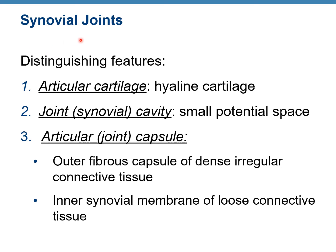The features that distinguish synovial joints from other types: first, they have articular cartilage — hyaline cartilage — on both bones forming the joint. Then they have a synovial cavity, which is a small potential space. They also have an articular capsule or synovial capsule. The articular capsule has two layers: the outer is the fibrous capsule and the inner is the synovial membrane.